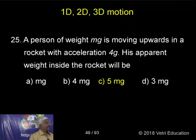A person of weight mg is moving upward in a rocket with the acceleration 4g. His apparent weight inside the rocket will be.